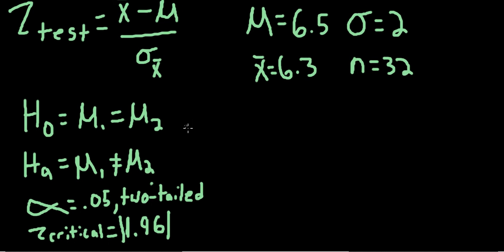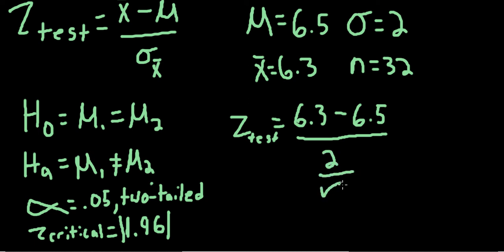So we can go ahead and conduct the z-test and see how it stacks up to our z-critical. For the z-test, we have for our sample mean 6.3. For our population mean, we have 6.5. For the standard error of the mean, we can take 2, which is our standard deviation in the population, and divide it by the square root of 32.